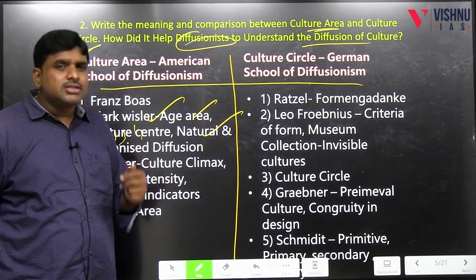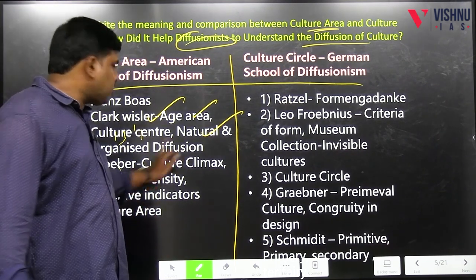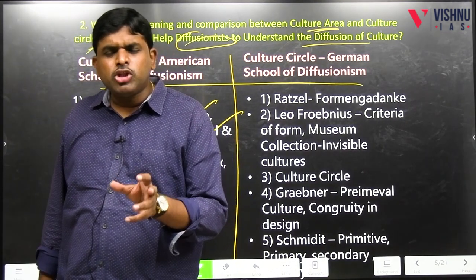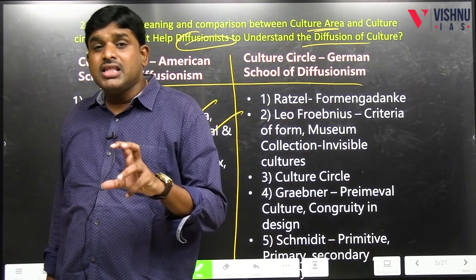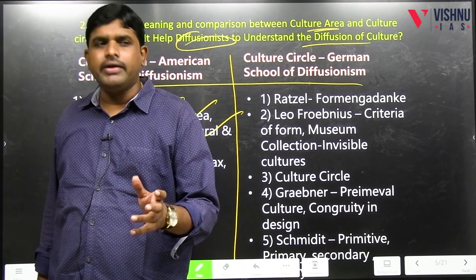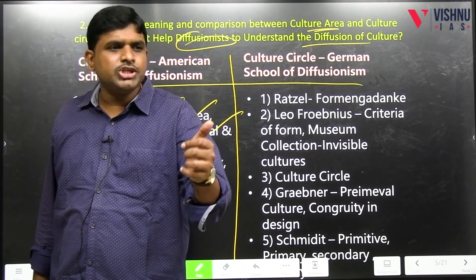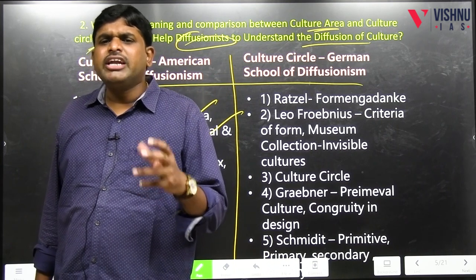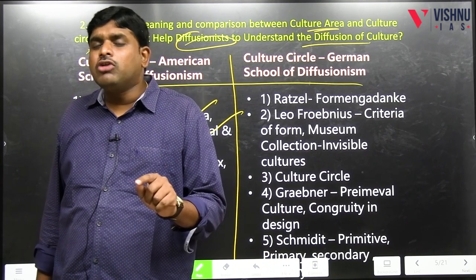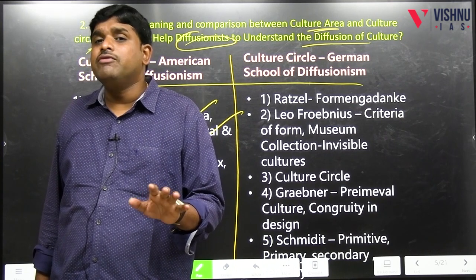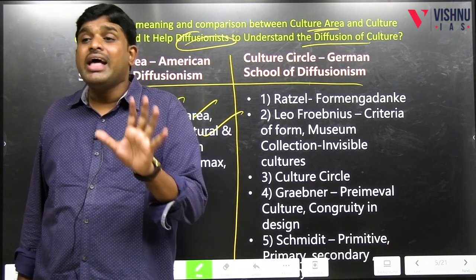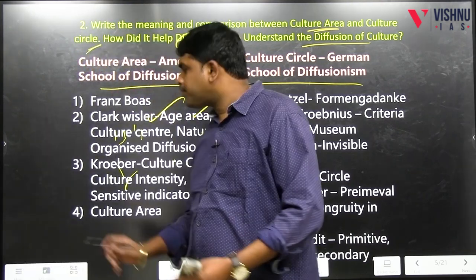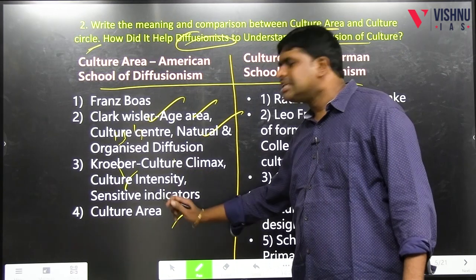After Kroeber: culture climax — the last point of contact of culture. Culture intensity — how seriously we are following the culture. Sensitive indicators: up to now we have been bothered only about materials, but the culture area theorists say there are some things which cannot be quantified — like non-material aspects such as religion, values, beliefs — by which we cannot tell whether diffusion happened or not. Those elements are called sensitive indicators because they cannot be quantified.